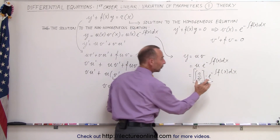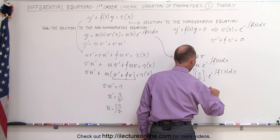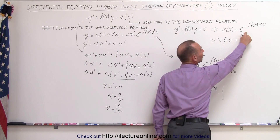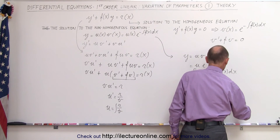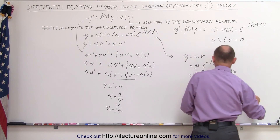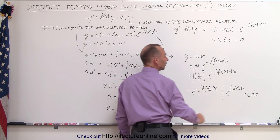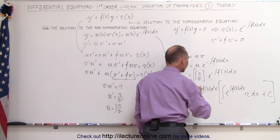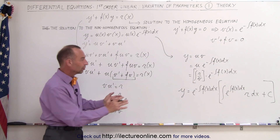Now I'm going to rearrange those terms, bringing this over so we have e to the minus integral of f of x dx times the integral. Remember that v equals e to the minus integral of f of x dx, so one over v equals e to the positive integral of f of x dx. So this can now be written as e to the minus integral of f of x dx times the integral of e to the positive integral of f of x dx times r dx, plus a constant of integration. This gives the exact same solution obtained in the previous set of videos for solving a non-homogeneous linear first-order differential equation.